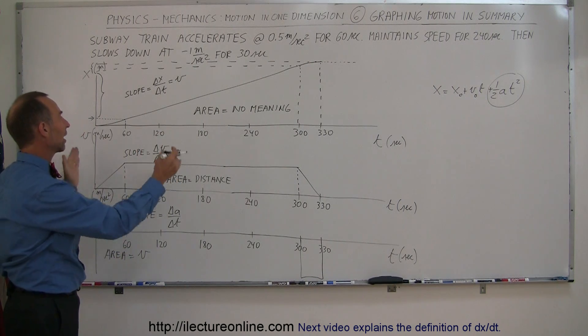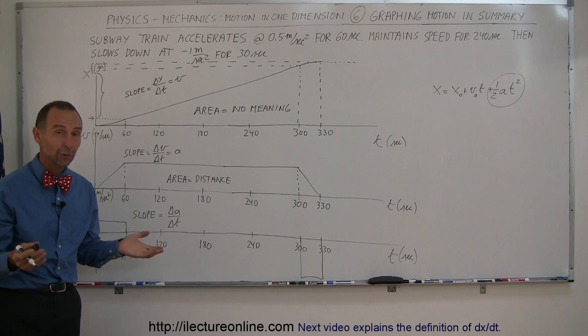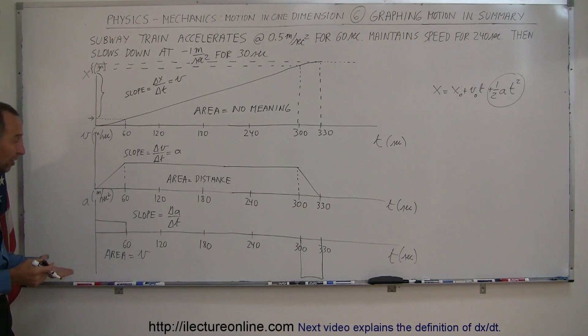And that's what the graphs look like: x versus t, v versus t, acceleration versus t for a subway train traveling from one station to another, first speeding up and then slowing down. And that's how you do that.